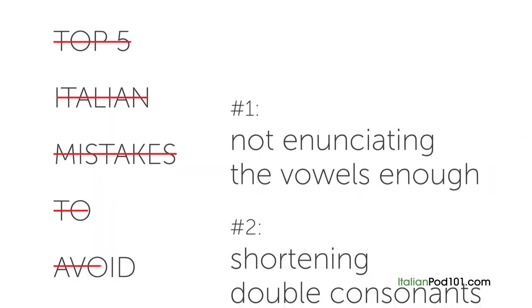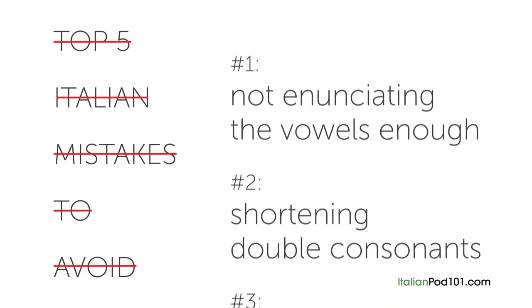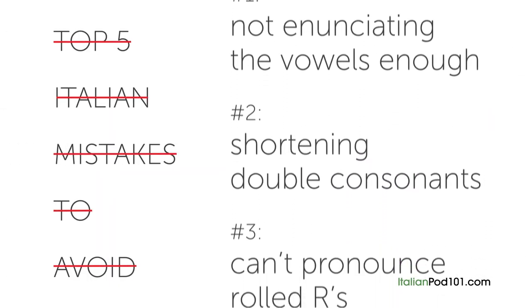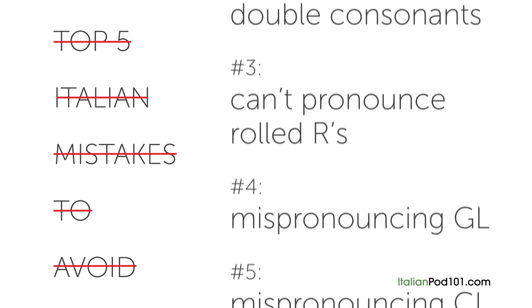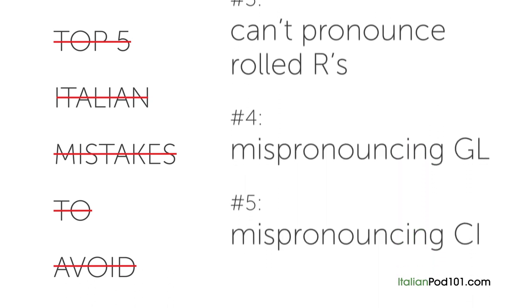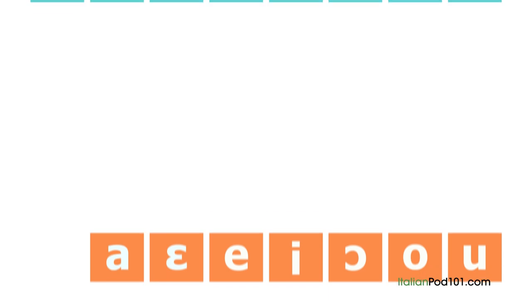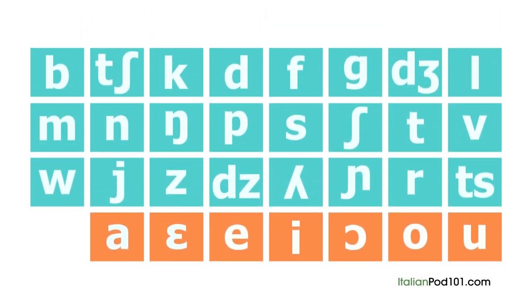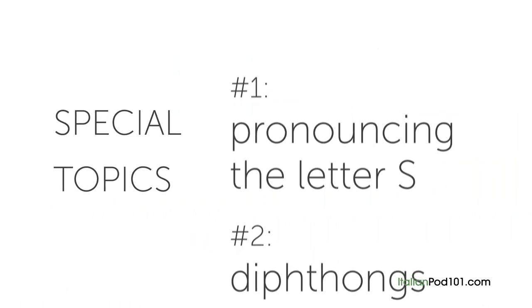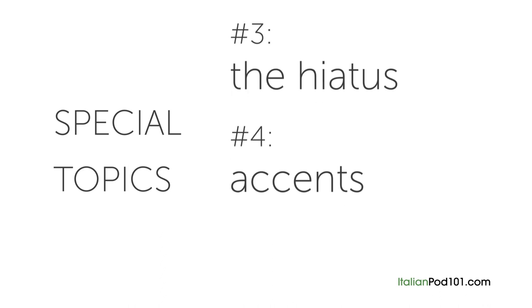In the next lesson, we'll look at the top 5 pronunciation mistakes Italian learners make — you'll want to make sure not to fall into these common traps. After that, we'll begin going through the vowels and consonants of Italian. We'll finish up the series by covering some special topics that will really make your Italian sound natural.